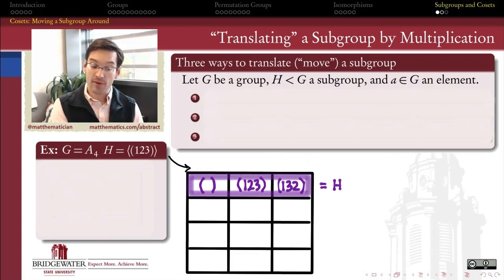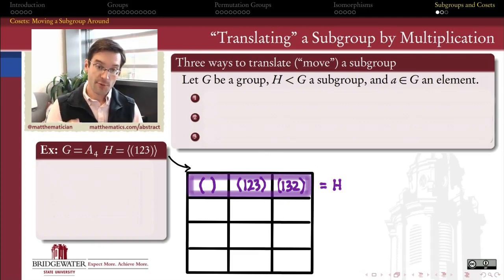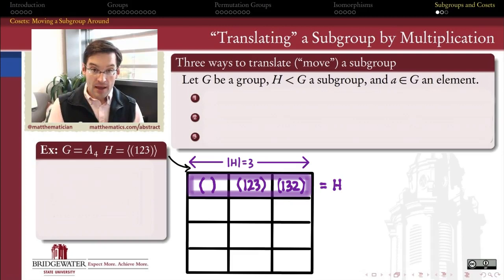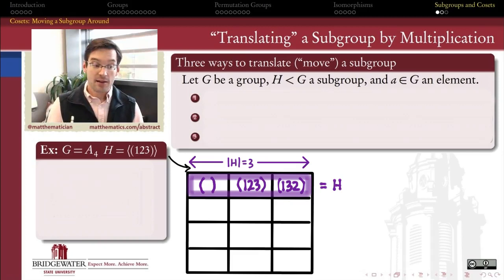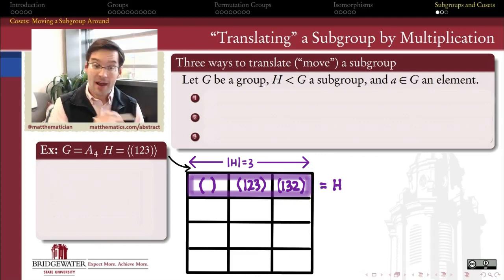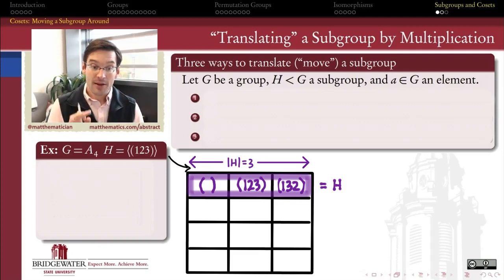That's a subgroup that has three elements: the identity, (1 2 3), and its inverse (1 3 2). We want to look at how to move that subgroup around inside of A4 in several different ways. This is a subgroup of order three. By analogy with the cyclic subgroup case, what we expect to see is that the cosets — the result of moving this around inside the group — are going to partition the group and all have three elements. If that's true for any group at all, then Lagrange's theorem must be true.